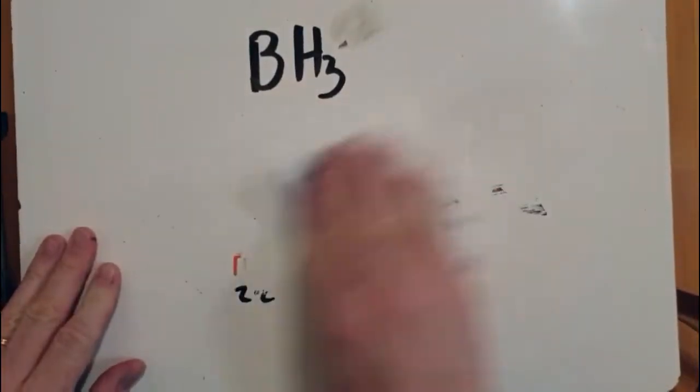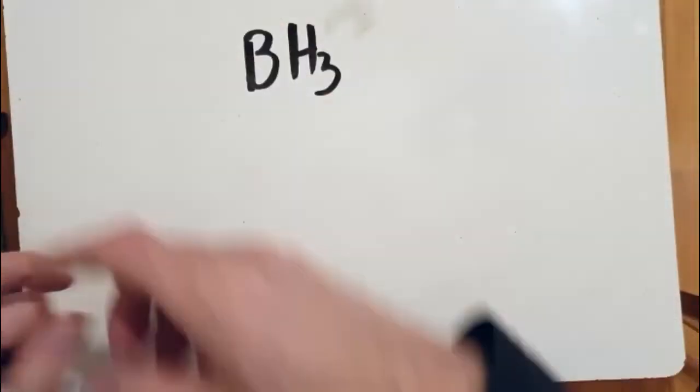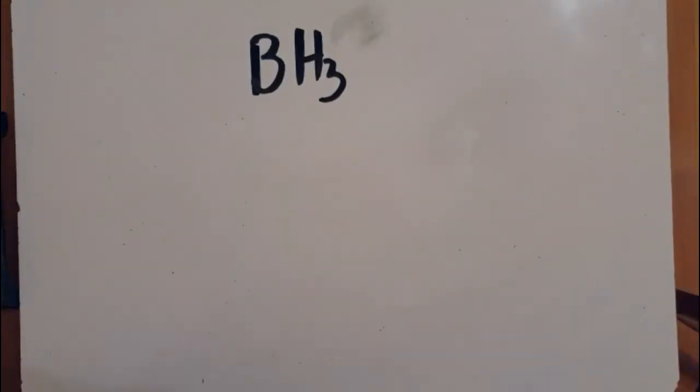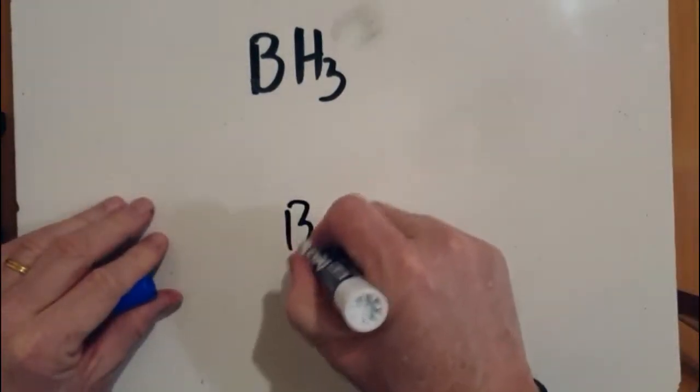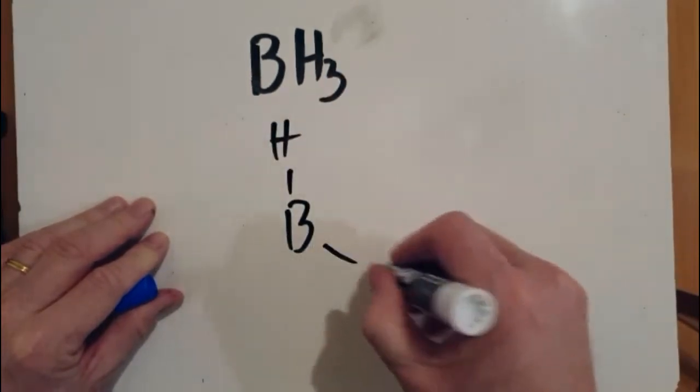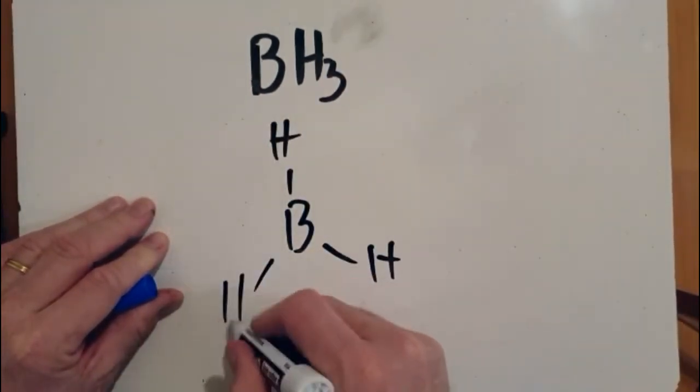All right. Formal charge. And a formal charge is normally used to decide which of different Lewis structures is the most stable. But since there's only one Lewis structure here, it's a little bit pointless, but you could be asked to do it.